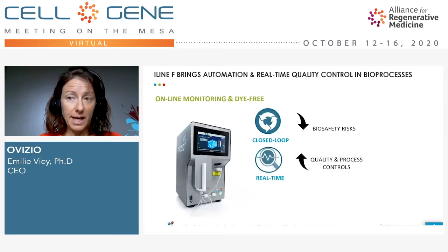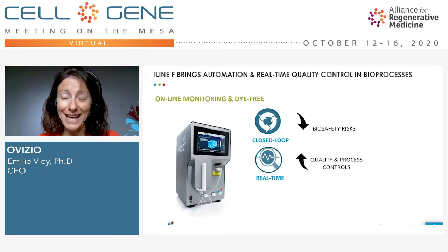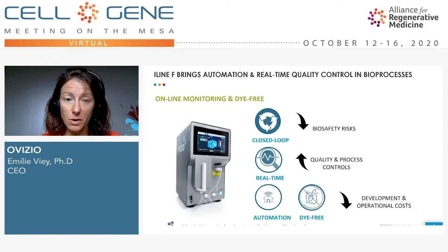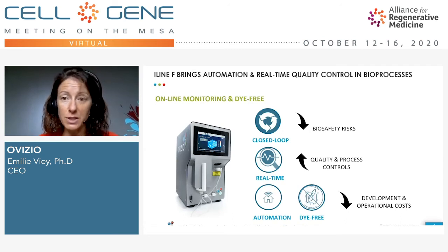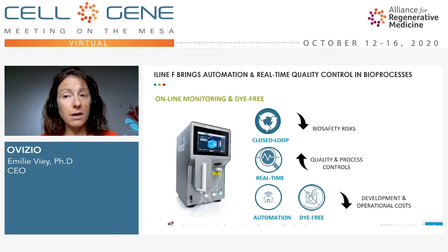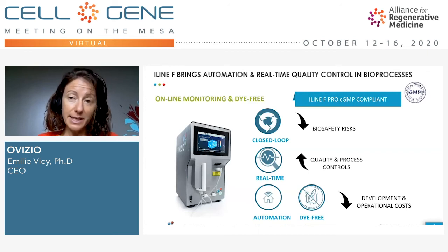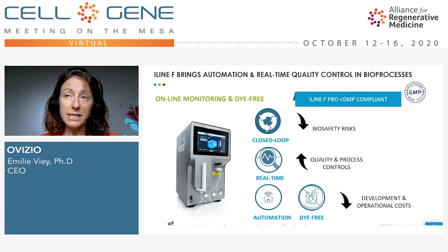Everything is a real-time measurement, so you get many data points throughout the day following the culture behavior. This increases quality and process control, and the system is fully automated. As soon as you press the button and start running your experiments, you have nothing to do — all in a die-free setup using holography and the optical properties of the cells only. In September this year, we launched the cGMP compliant version of this product, named the AlignF Pro.